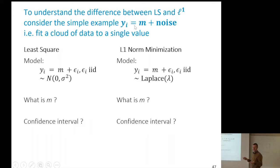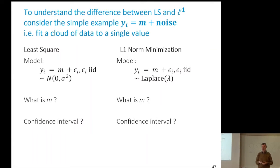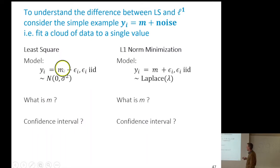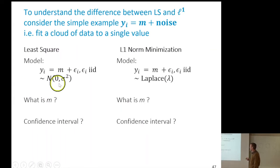It looks like a stupid thing, but that's what we do when we summarize a set of data and we want to summarize with the mean or the median or whatever — one single number, because we think they're all close together and we're trying to estimate this number with the cloud of points. In both cases, every data point Yi is equal to this value M, a single unknown number, plus noise, and the distribution of the noise is different.